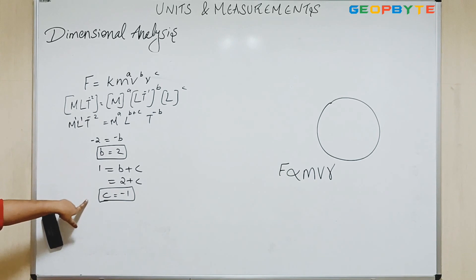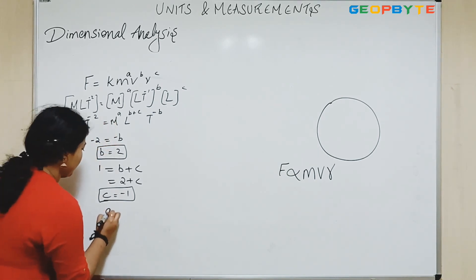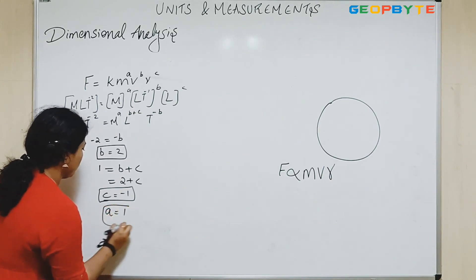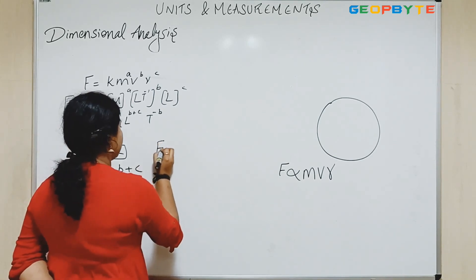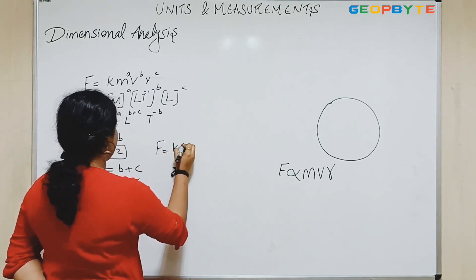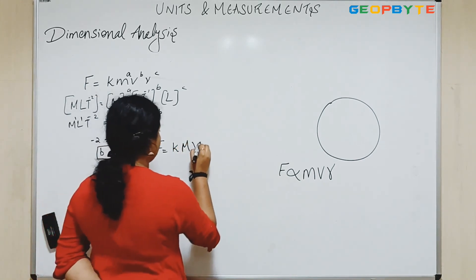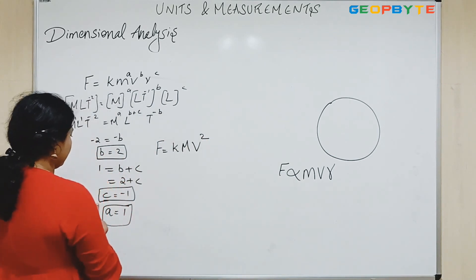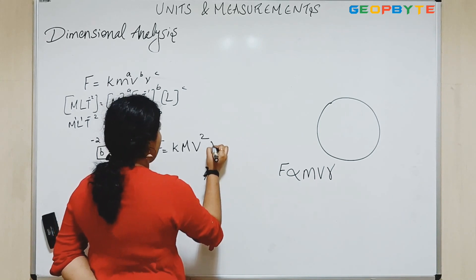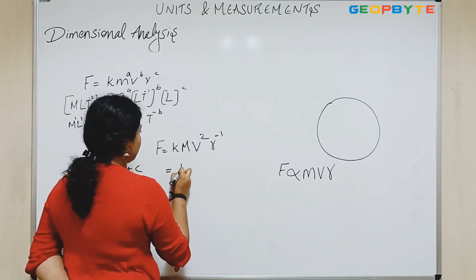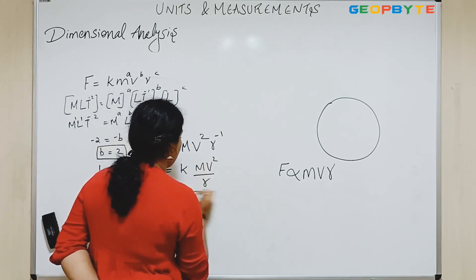Now we have got B and C. We have to find A. Equating the powers of M: A equals 1. Now we have got all values: A equals 1, B equals 2, C equals minus 1. So F equals some constant K times M to the power 1, times V to the power B which is 2, times R to the power C which is minus 1. That is equal to K M V squared by R.